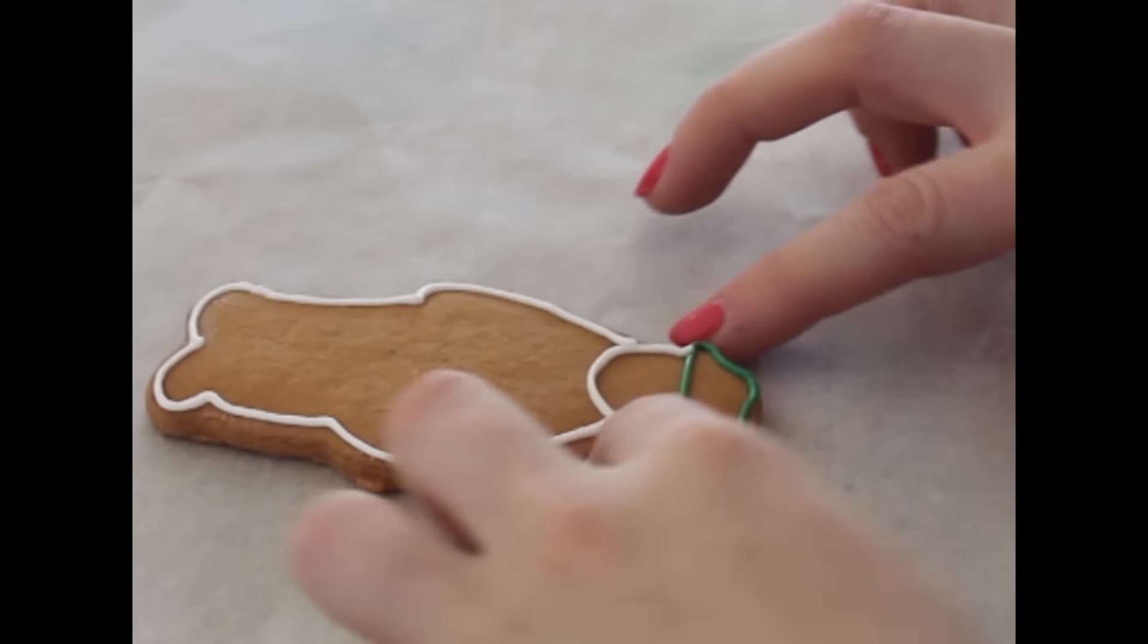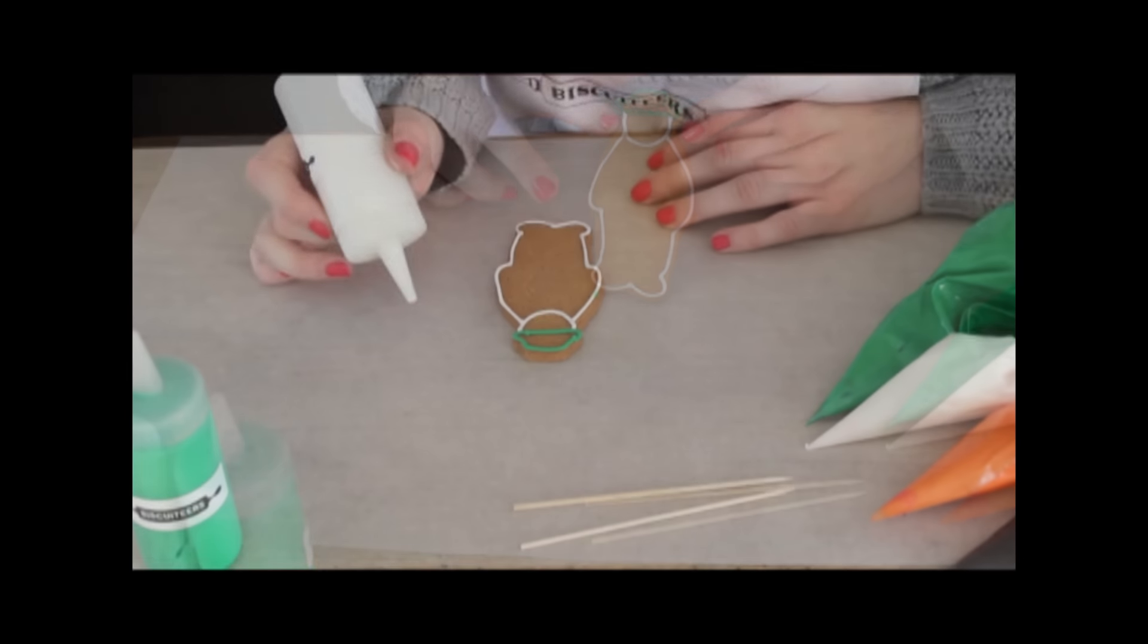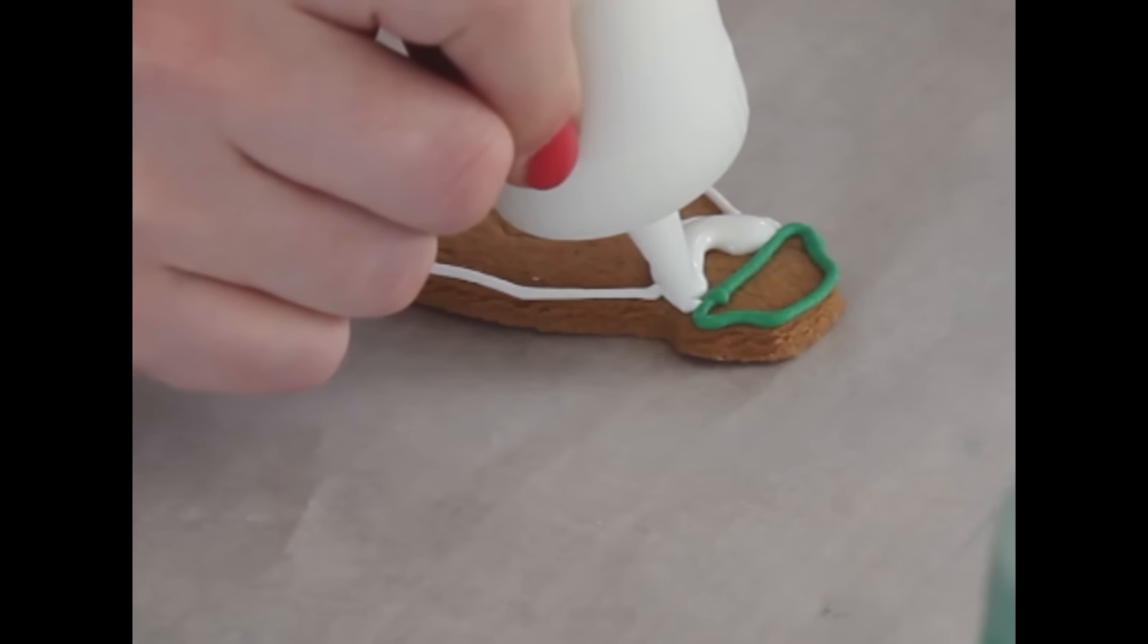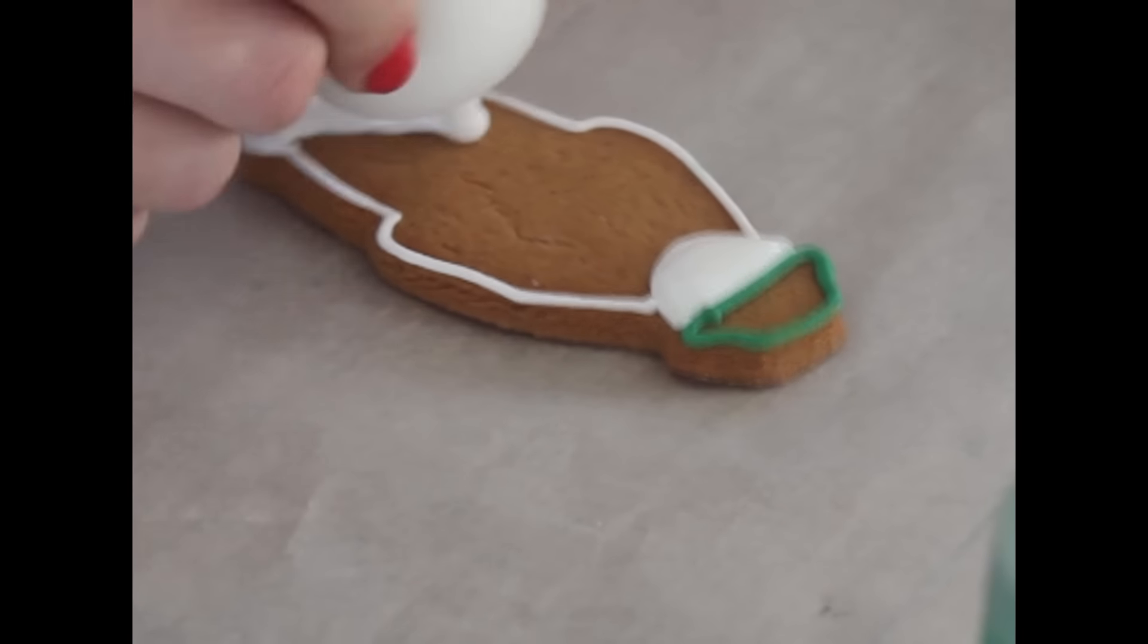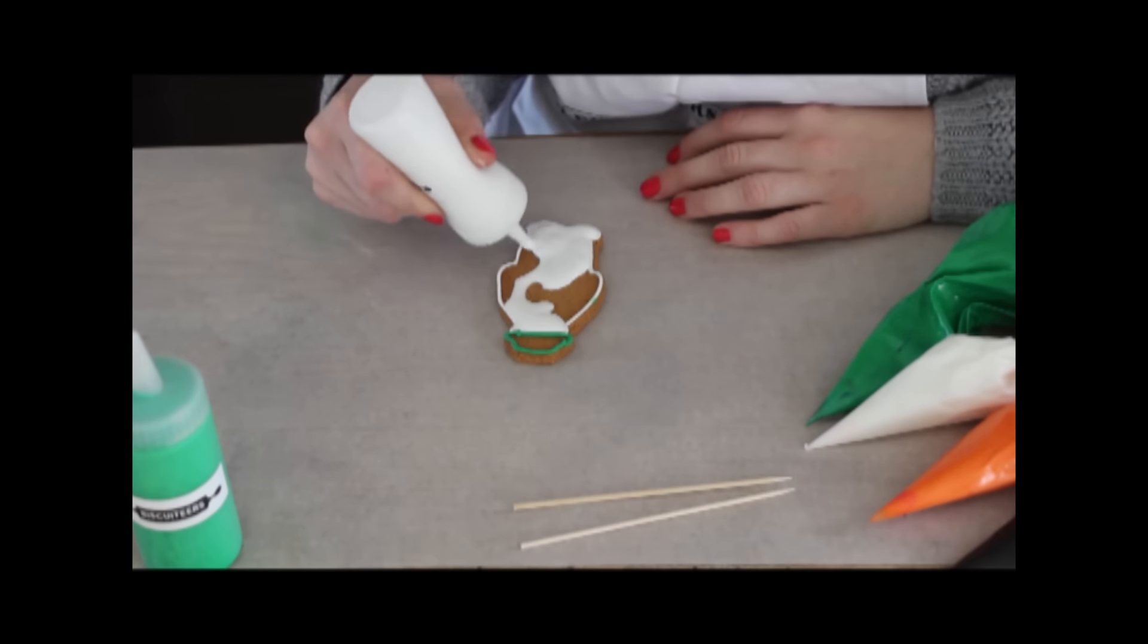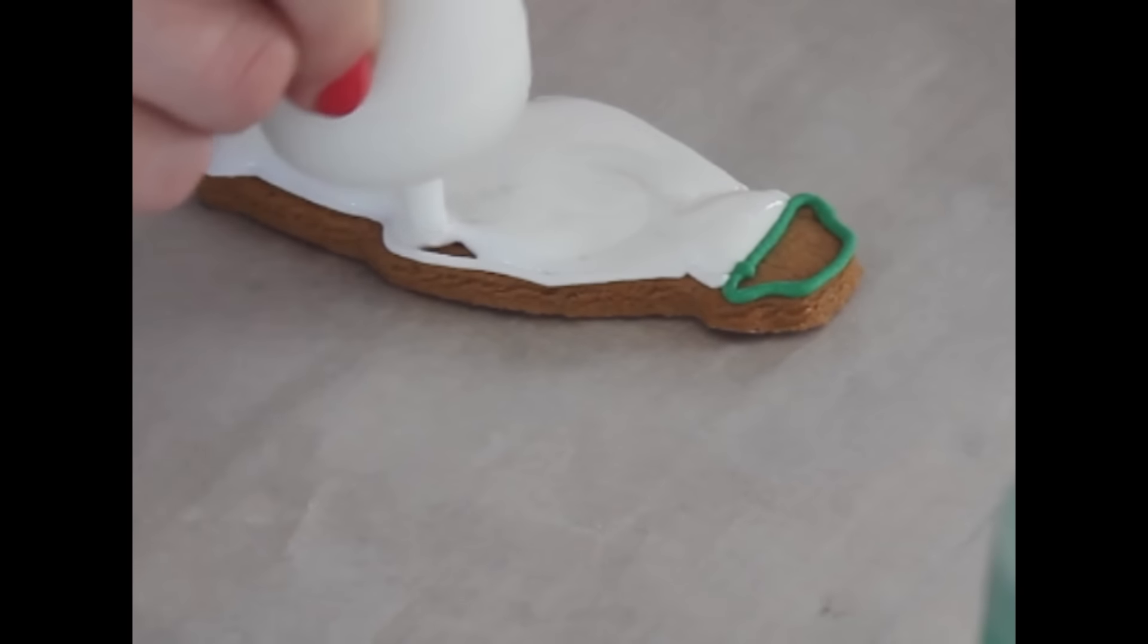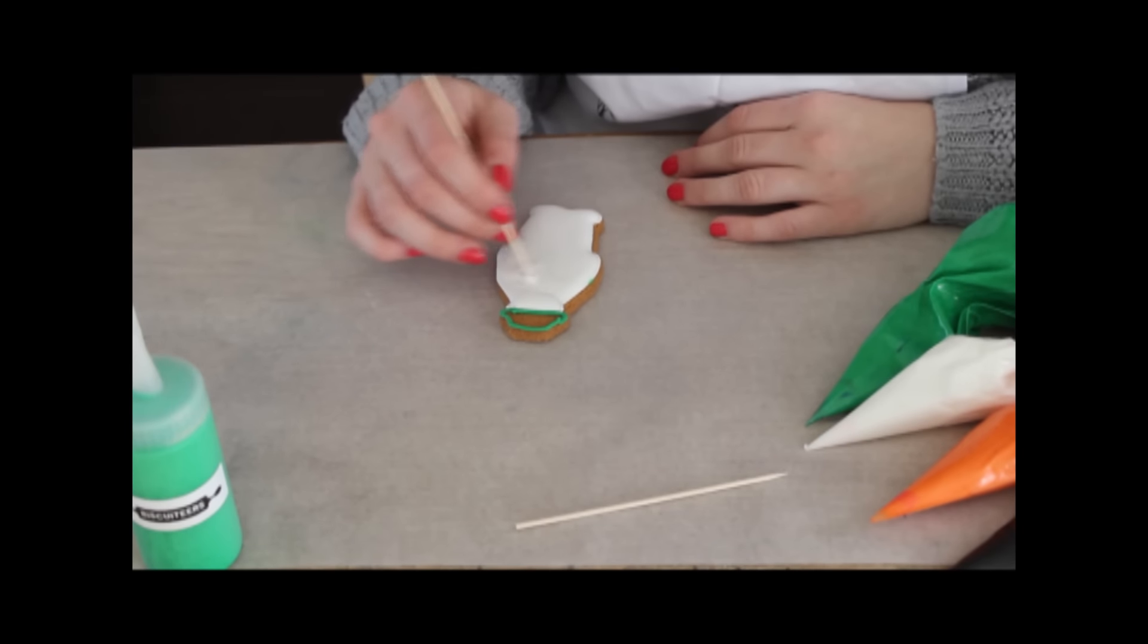You just need to let that dry for about 10 minutes until the line has set hard. Now you need to flood your biscuit with your color. We've got our white runny icing here and we're just going to pop it in to the face section and then flood the rest of his body. It's nice and simple, only using two colors. Just fill that whole area with your runny icing and then you can just use a cocktail stick to burst any of the air bubbles. It gives it a really smooth surface.